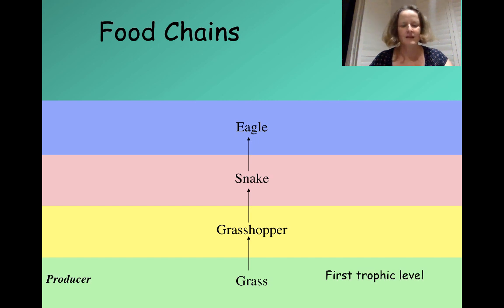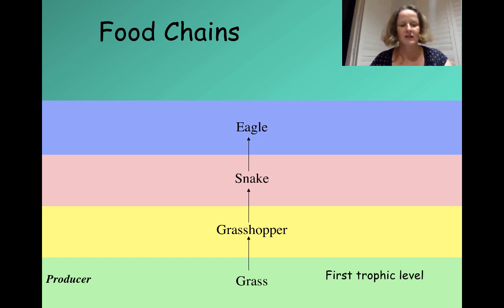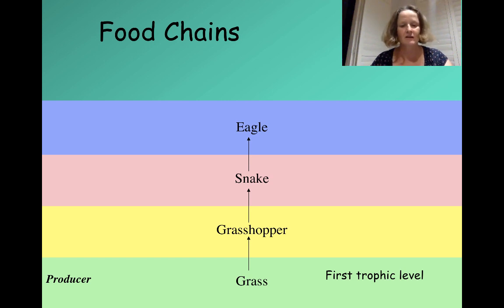At the bottom, at the beginning of every single food chain, we always have a green plant. The green plant is able to photosynthesise, so it is able to capture sunlight energy. We call an organism that can do that a producer, because it produces organic molecules — food molecules — using the energy from the sun and trapping it inside the molecules to allow other organisms to use that energy later on.